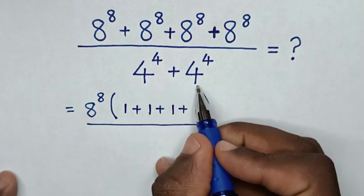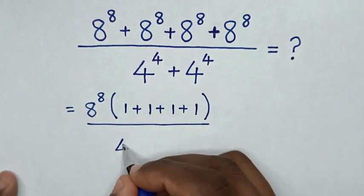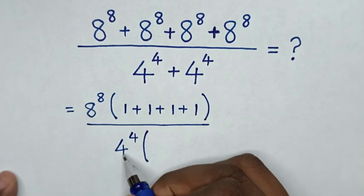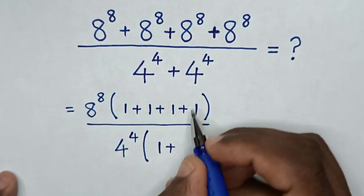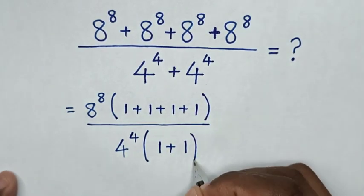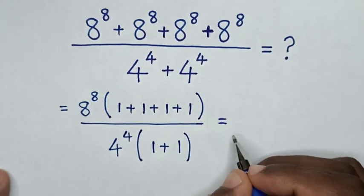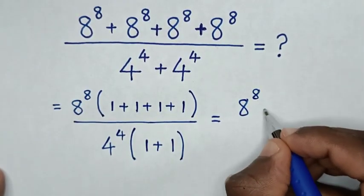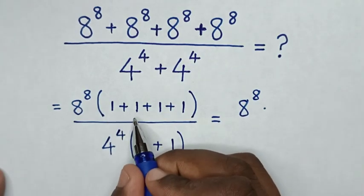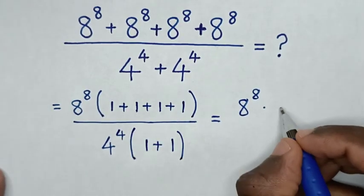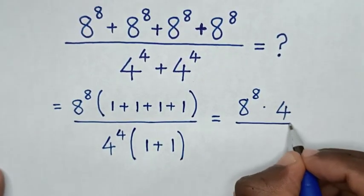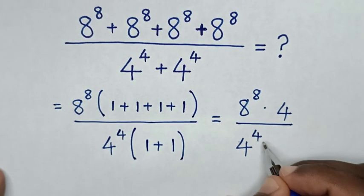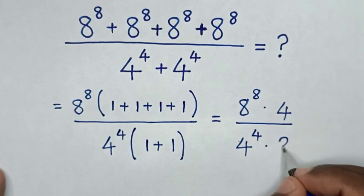Here in the denominator, 4 power 4 is common, so we take 4 power 4 out of the bracket. Then this divided by this is 1, plus 1. Then it is equal to 8 power 8 times 1 plus 1 plus 1 plus 1, which is 4, over 4 power 4 times 1 plus 1, which is 2.